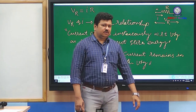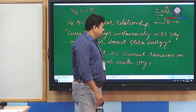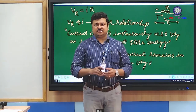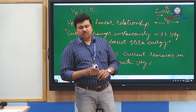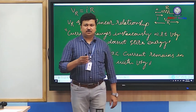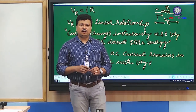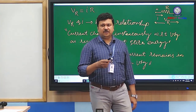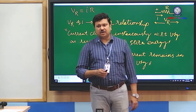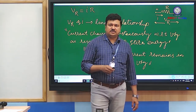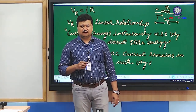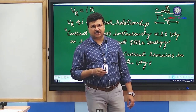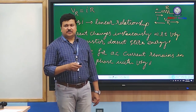Therefore, initial conditions in a resistor are absent — things change instantaneously. Before the application of voltage there cannot be current in a resistor, since current flows only when voltage is applied. In the next session we will look into initial conditions in an inductor and a capacitor, then analyze systems with inductance and capacitance and their transient and steady-state responses with both DC and AC sources.